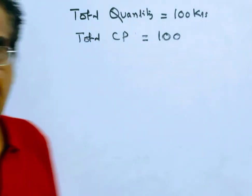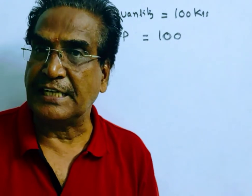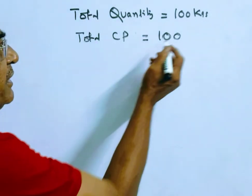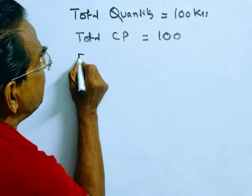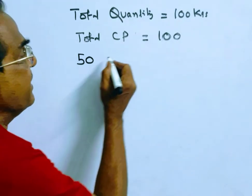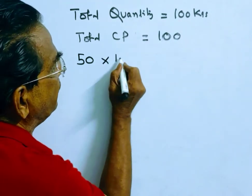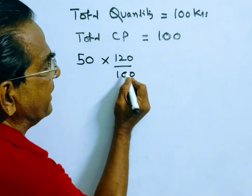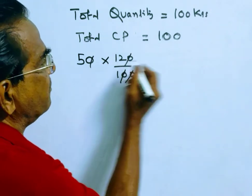See friends, it is given that half of the quantity is sold at a profit of 20%. Half of the quantity means 50 kg worth quantity. 50 kg worth quantity of sugar is sold at a profit of 20%. So what is the amount realized? What is the amount realized?